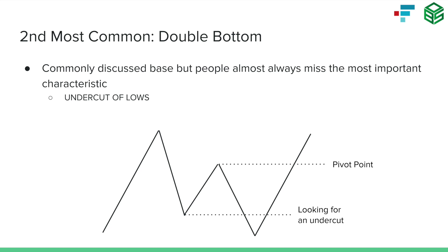The second most common base is called the double bottom — and a lot of people are talking about it now because the market indexes today look like they could be forming one. But the issue is many people miss the most important characteristic of the double bottom: the undercut of the first low. A true double bottom isn't just a W or a retest of the same support zone — you would ideally see an undercut of that first low, which creates the shakeout and adds dry powder for the move upwards. The pivot point would be at that middle high that creates the second leg down, and that's the safest place from a risk-reward perspective to buy through a double bottom.